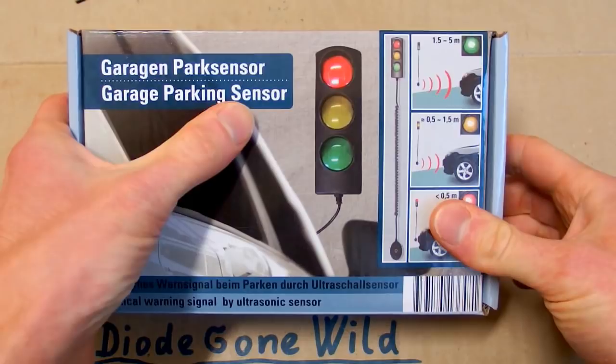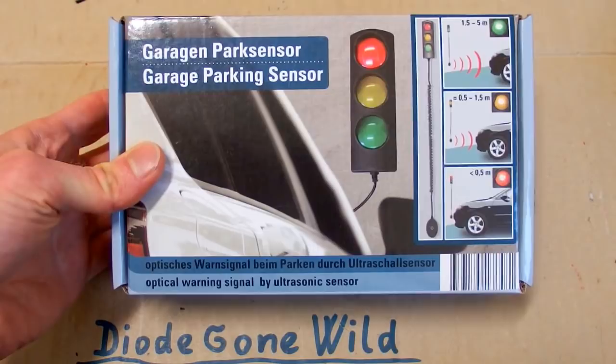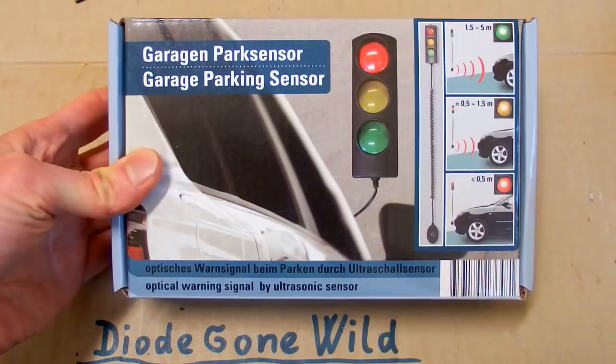So today let's take a look at, not my cat, but this traffic light. It's actually not a traffic light, it's a garage parking sensor. It's useful especially if you are not very good at driving. You can install it on the wall in your garage and it will give you a red light if you are about to hit the wall.